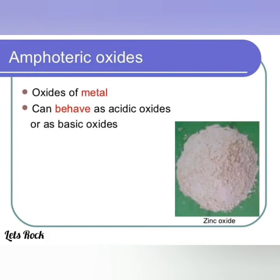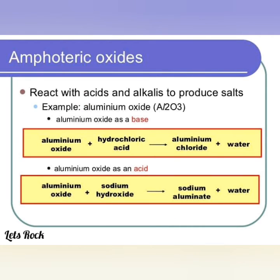Amphoteric oxides are oxides of metals that can behave as acidic oxides or as basic oxides. An example is zinc oxide. Amphoteric oxides react with both acids and alkalis to produce salts. For example, aluminium oxide can act as a base or as an acid.